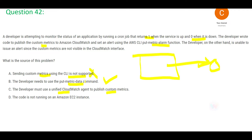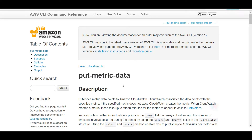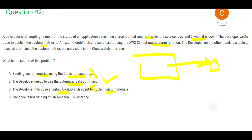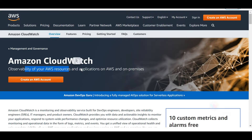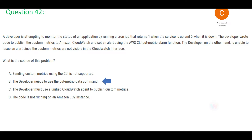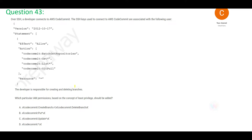CloudWatch agents are typically installed on EC2 instances and keep sending metrics data. However, if you want CloudWatch to capture a new custom metric, the agent alone won't help — you first need to put that metric using the put-metric-data command, and then the agent can start capturing it. Option D is wrong because CloudWatch does not require an EC2 instance — it is a managed service that works on both AWS resources and on-premises environments.